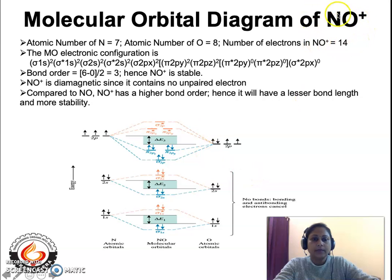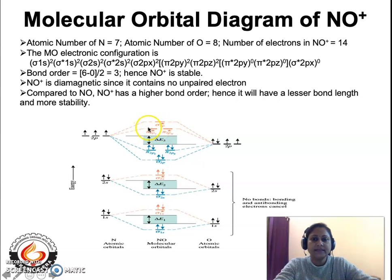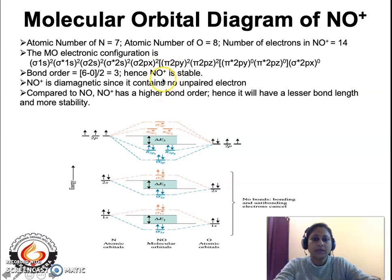Now let us see the MO diagram of NO+. The NO molecule has 6 bonding electrons and 1 anti-bonding electron. When considering NO+, one electron leaves the molecule — the electron in the pi star 2pz is the most probable to be released. So the bond order becomes (6 minus 0) divided by 2, which is 3. NO+ is a stable molecule and is diamagnetic because it contains no unpaired electrons.